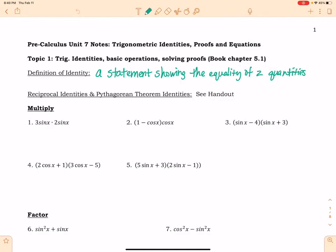Okay, PreCal, in this video we are starting Unit 7. The first thing I want to do is tell you that we are going to learn to deal with trigonometric identities, to work on proofs and equations involving our trig identities. The very first thing I want to do in this video is talk about topic 1 and let's just define an identity.